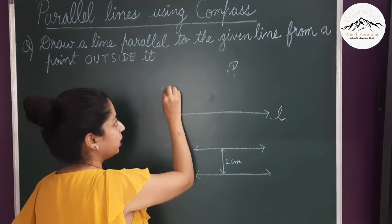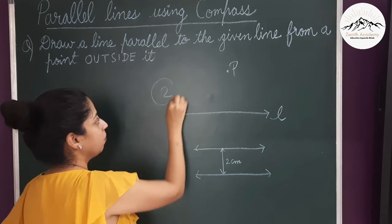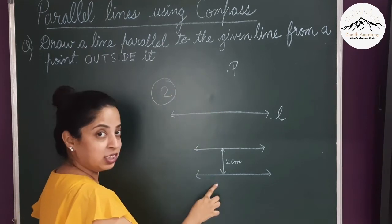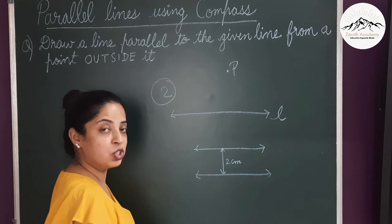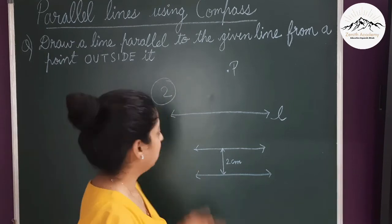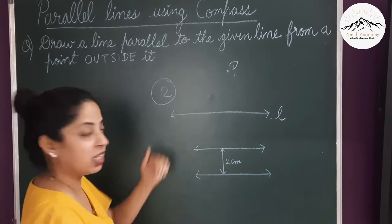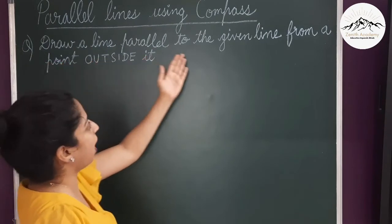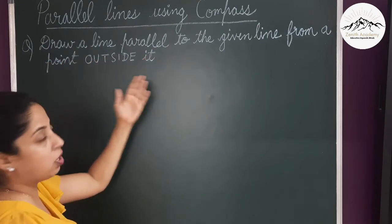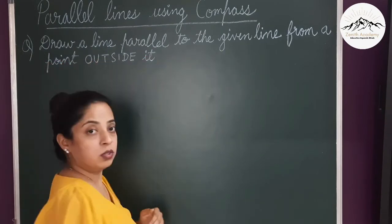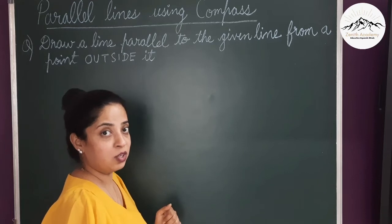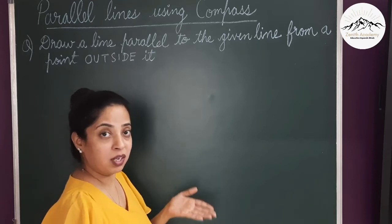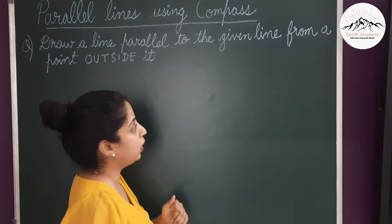In this first type there are two methods, and I will teach you both using a compass. The first is: draw a line parallel to the given line from a point outside it. So suppose you have a line L and you have to draw another line which is parallel to it from a point P.